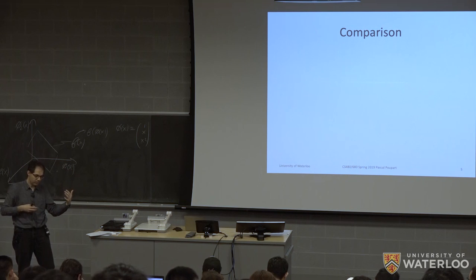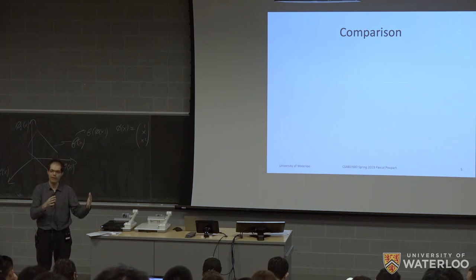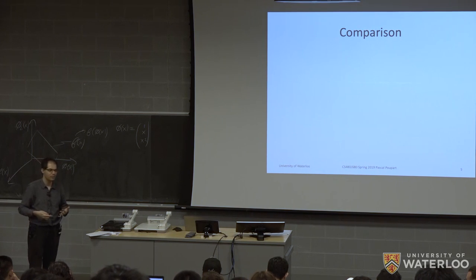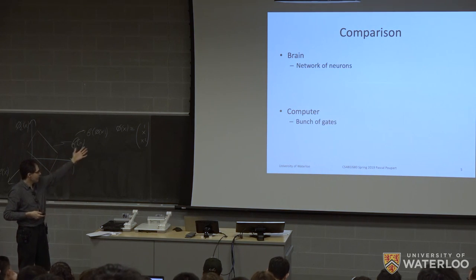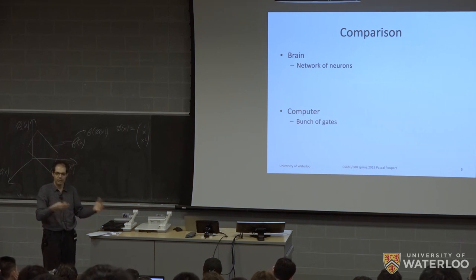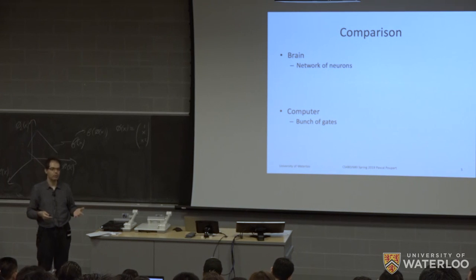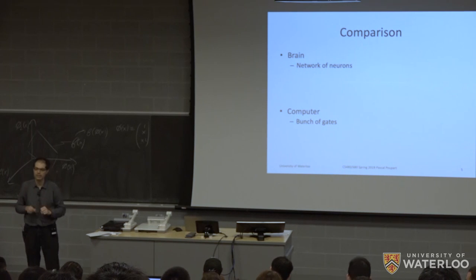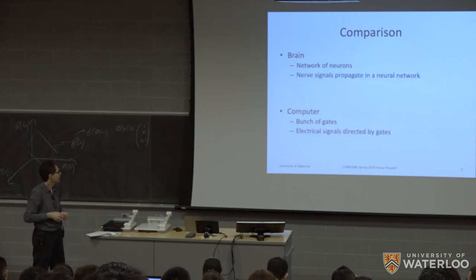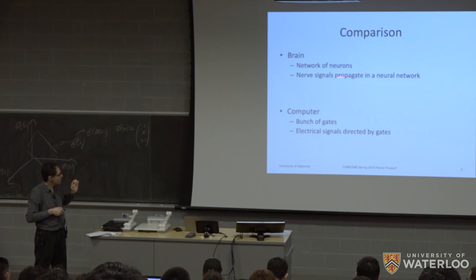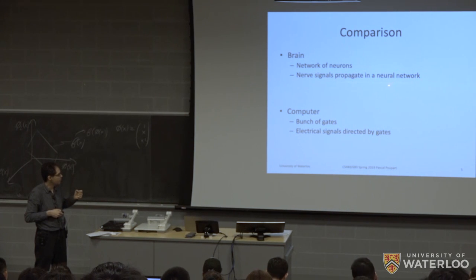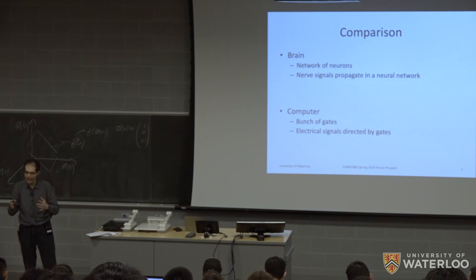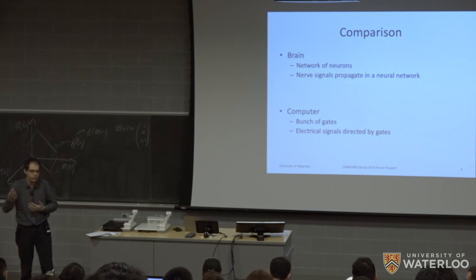Let's make a brief comparison between the brain and computers. For the brain, we have a network of neurons; for any computer, it's really a network of logic gates — these are the basis for everything computed in a computer. The brain uses chemical signals traveling through the network of neurons; in comparison, computers use electrical signals directed by logic gates.